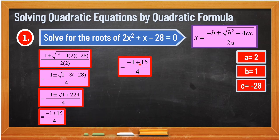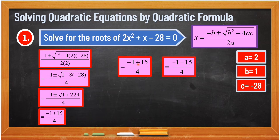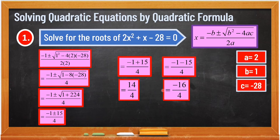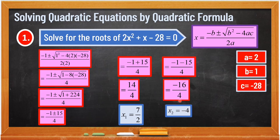Next, we separate the plus and minus. Using plus first: negative 1 plus 15 over 4. On the other side: negative 1 minus 15 over 4. Then simplify. Negative 1 plus 15 is 14 over 4, and negative 1 minus 15 is negative 16 over 4. Simplify: x sub 1 is equal to 7 over 2, and negative 16 divided by 4 is negative 4. Therefore, the roots of our quadratic equation are 7 over 2 and negative 4.